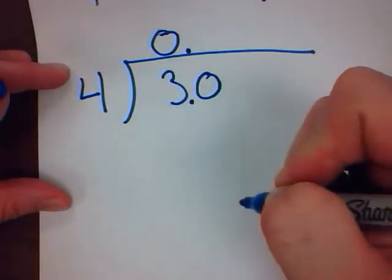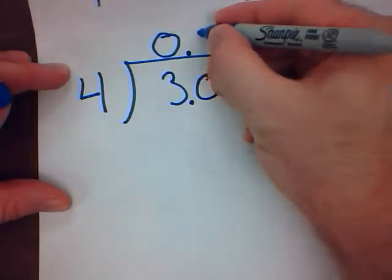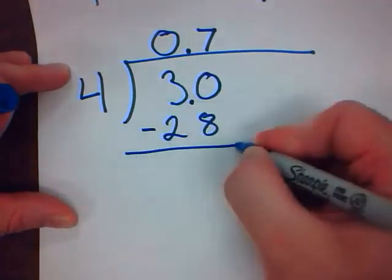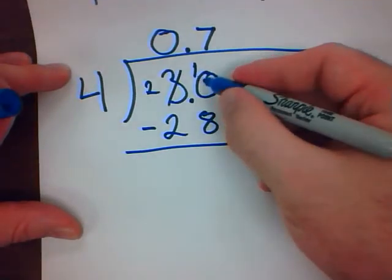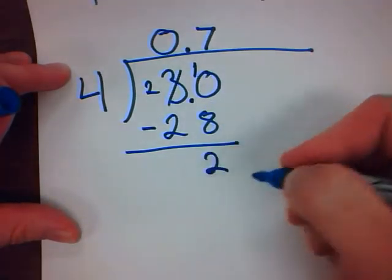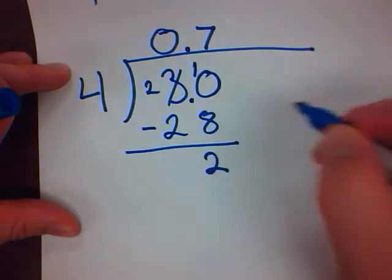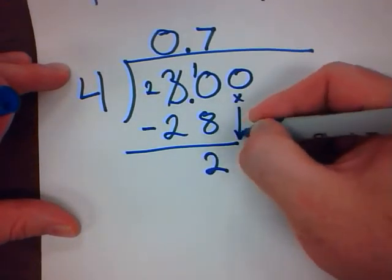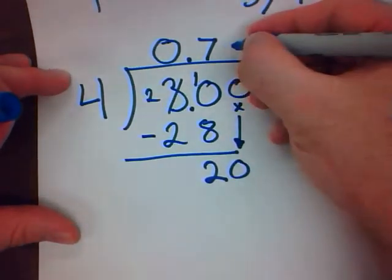How many times does 4 go into 30? Well, let's do some times tables. And I subtract. Gonna have to borrow. 10 minus 8 is 2. I'm not done. This is not a remainder. I have to keep going. Add another 0. Bring the 0 down. 4 into 20. Use my times tables.